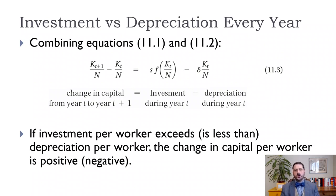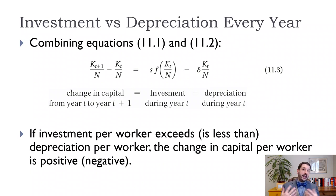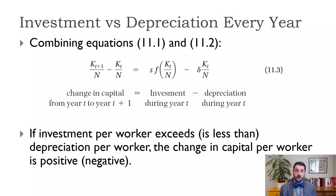This is really important: if we're saving more than is depreciating, our capital stock is going to be going up. If we're saving less than is depreciating, our capital stock is going to be going down. We know that output per worker is a function of capital per worker, so output per worker will be going up and down when capital per worker is going up or down.